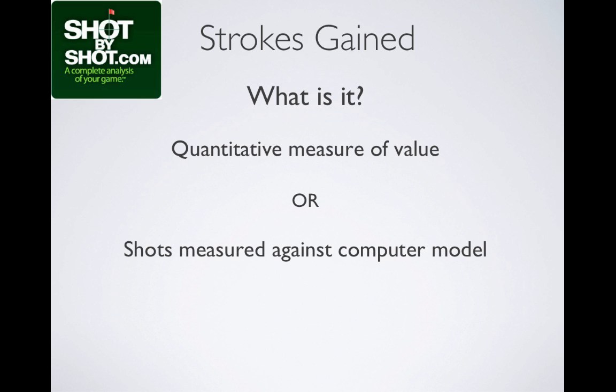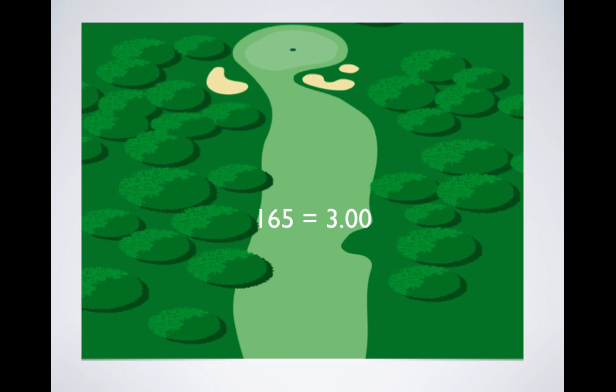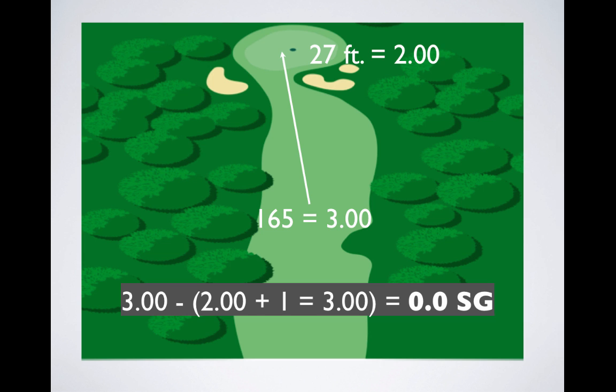The best way to explain strokes gained is by example. Say we're starting in the fairway with an approach shot at 165 yards with a value on the model of 3.00. We hit that approach shot onto the green at 27 feet with a value of 2.00. The strokes gained calculation looks like this: starting position 3 minus finishing position 2 plus the stroke to get there equals 3. So 3 minus 3, the strokes gained calculation is 0, which is a good thing.